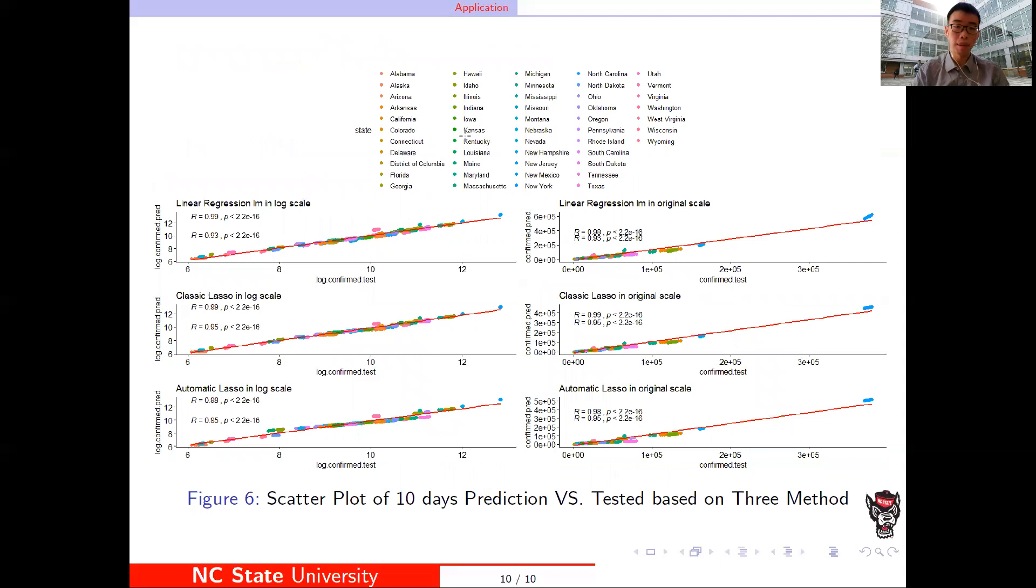At the last slide of my presentation, we compared the predicted confirmed cases of COVID-19 and the tested confirmed cases of the COVID-19 for three different methods: LM, classical Lasso, and AutoLasso, both in the log scale and the original scale for the U.S.